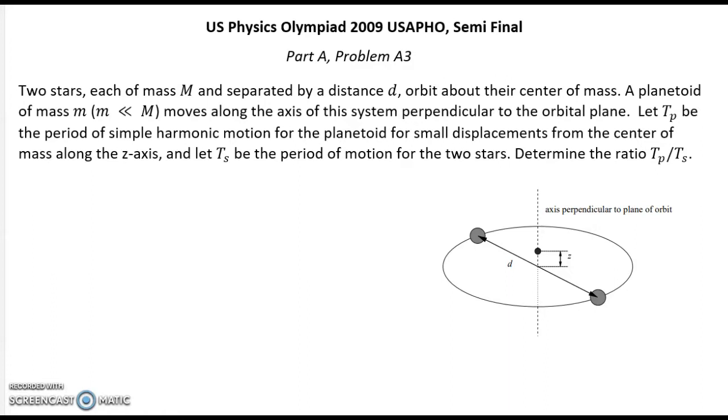Let Tp be the period of simple harmonic motion for the planetoid for small displacements from the center of mass along the z-axis. And let Ts be the period of motion for the two stars. Determine the ratio Tp over Ts.